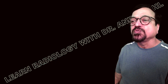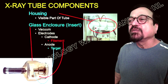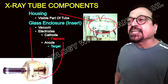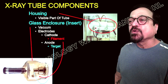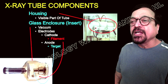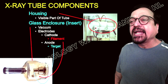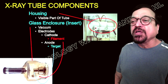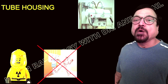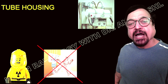The components of the x-ray tube include: the housing, which is what we see from outside; the glass envelope — also called the insert — which is a vacuum; and the electrodes, which include the cathode (the filament) and the anode (called the target).